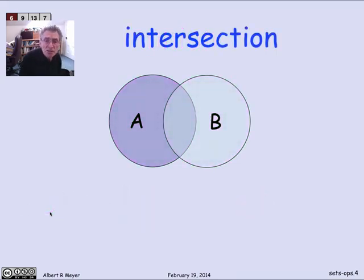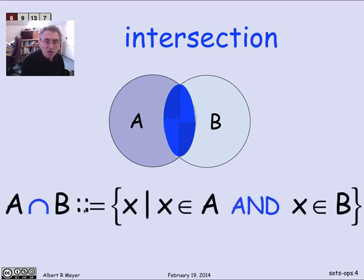The next basic operation is intersection. It's the points that are both in A and B, the points in common, which are now highlighted in blue. So the definition of A intersection B, we use an upside down union symbol for intersection. It's the set of points that are in A and are in B.